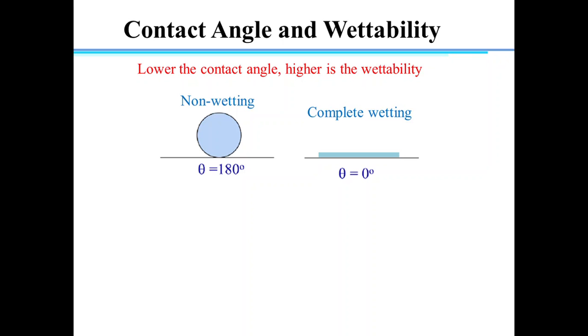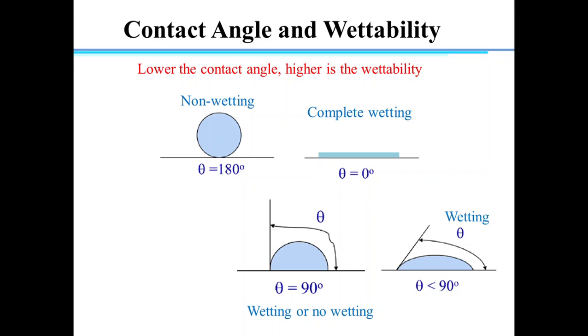So, 90 degrees is the angle where two phases show either wetting or non-wetting. If the contact angle between the liquid drop and solid surface is less than 90 degrees, it is called wetting. And if it is higher than 90 degrees, then it is called non-wetting.